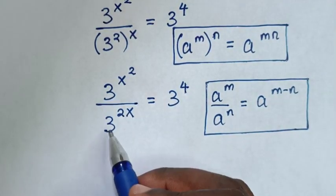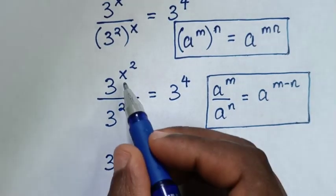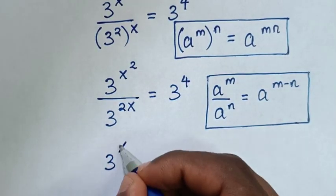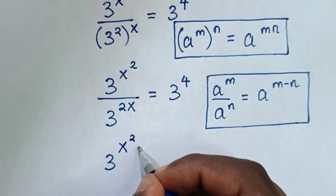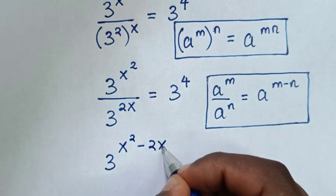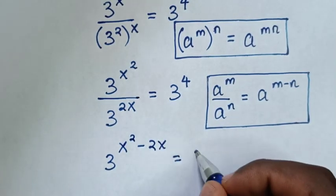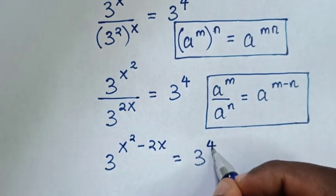So in here it will be same base of 3, power of x square minus power of 2x, is equal to 3 power of 4.